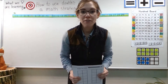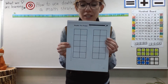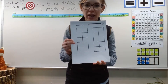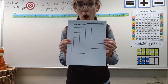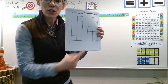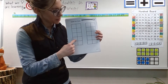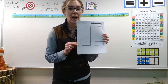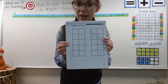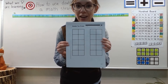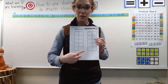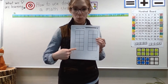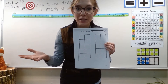All right, first off, I have a new 10-frame chart. What do you notice about this 10-frame chart? Right, there are two of them. There's a 10 frame here and a 10 frame there. Now, if a 10 frame has 10 squares, then how many squares do we have on this page? Right — 10 plus 10 equals 20. We have double the 10 frames.